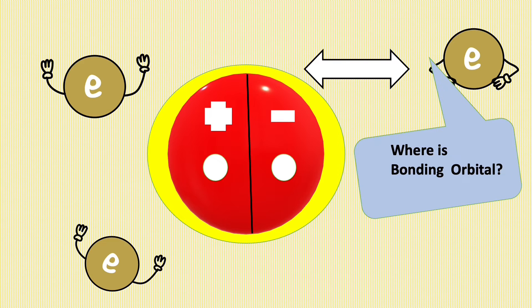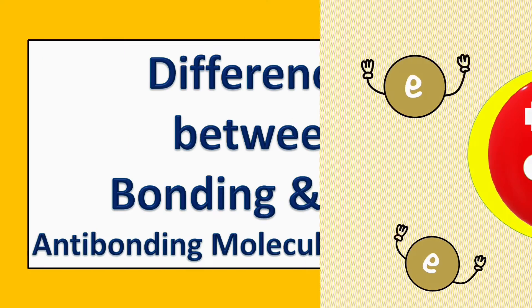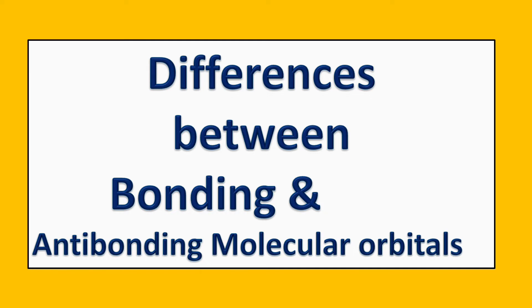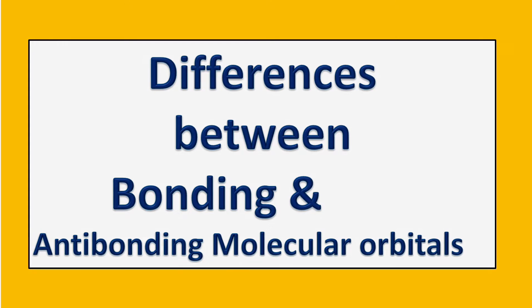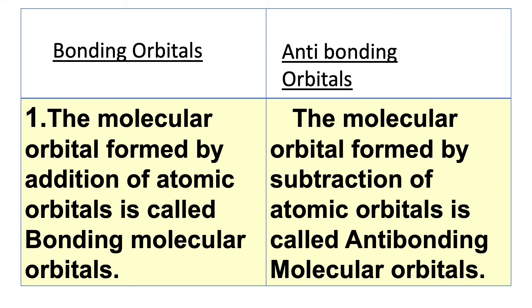Welcome to Aurora Chemistry for Everyone. Let us see the difference between bonding and antibonding molecular orbitals. The molecular orbital which is formed by addition of atomic orbitals is called bonding molecular orbital, whereas the molecular orbital which is formed by subtraction of atomic orbitals is called antibonding molecular orbital.